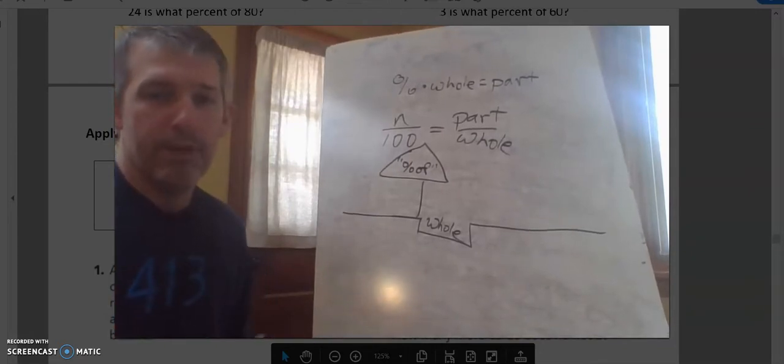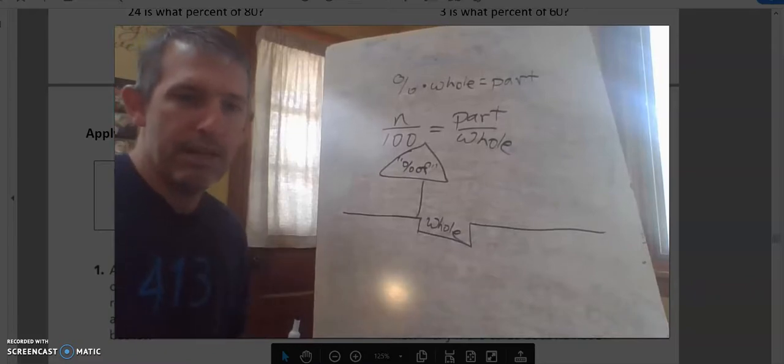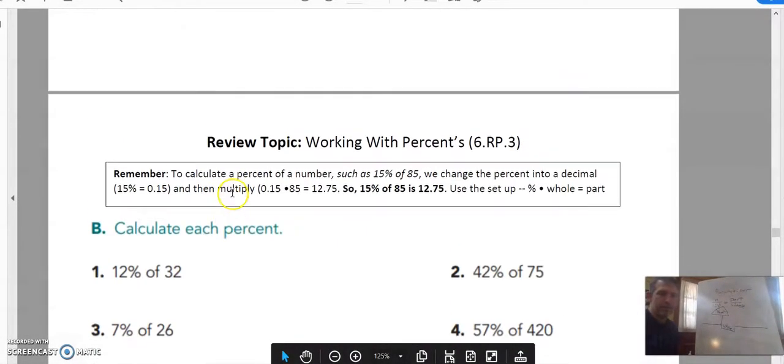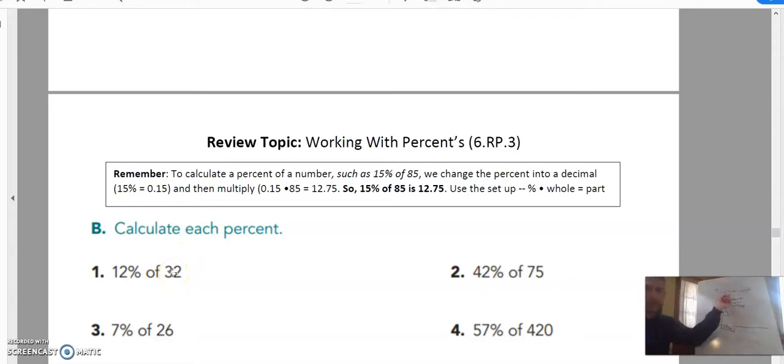Go back to our examples previously. How did we know we were looking for the part, the percent, or the whole? Look at this. Percent of is my phrase I'm looking for. What comes right after the percent of? 32. What was 32? It was my whole. We put that in the position for the whole.